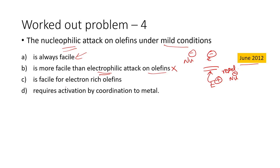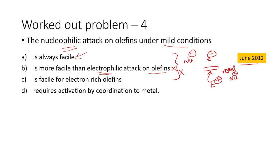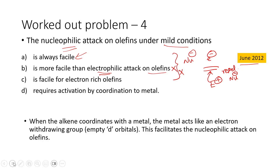Option three — facile for electron-rich olefins — is even worse, because if it is an electron-rich olefin, there is even more electron density present and the nucleophile, being negative, cannot attack very effectively. So all three options are not possible. The last option is that nucleophilic attack requires activation by coordination to a metal. When an alkene coordinates with transition metals, which have empty d-orbitals, the alkene transfers its electrons to the metal, thereby making it electron-deficient.